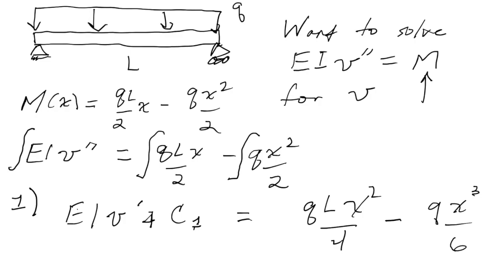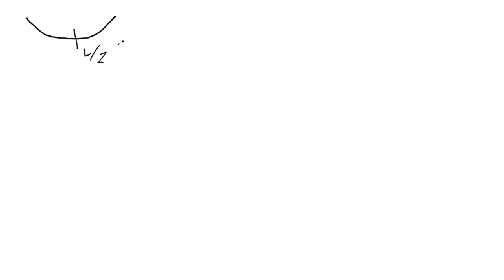Now we need to evaluate the unknown integration constant C1. For a simply supported beam, v' represents the slope. The beam deflects symmetrically, so at L/2 the slope v' must equal zero. We can use that information to solve for C1.